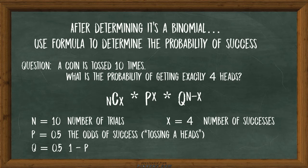Times the probability of success, or tossing a head, raised to the x power, times Q to the n minus x power. N is 10, the number of trials. X is 4, the number of successes. P is equal to 0.5, or the odds of success of tossing a heads.